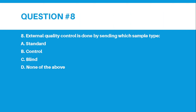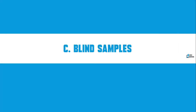Number 8. External quality control is done by sending which sample type? A. Standard, B. Control, or C. Blind. The correct answer for number 8 is letter C — Blind samples.